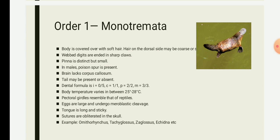They will have webbed feet. In Monotremata the external pinna is distinct but very small. They will have a poisonous spur which is present in the male. The corpus callosum in the brain may be present or absent in some forms.